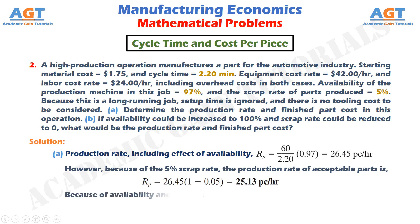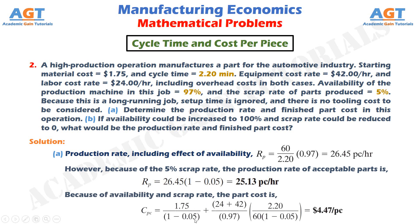Because of availability and scrap rate, the part cost CPC equals: material cost of $1.75 divided by (1 minus scrap rate), plus (equipment cost rate of $42 per hour plus labor cost rate of $24 per hour) divided by availability of 0.97, multiplied by cycle time of 2.20 minutes divided by 60, divided by (1 minus scrap rate of 0.05). This gives a total part cost of $4.47 per piece for this operation.